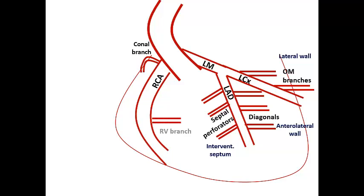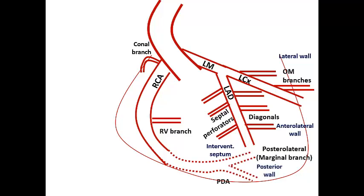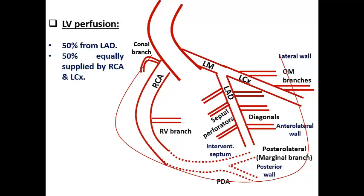The LCX runs in the left AV groove and gives origin to the obtuse marginal (OM) branch supplying the lateral wall of the left ventricle. The right coronary artery (RCA) runs in the right AV groove, giving origin to the conus branch proximally — sometimes arising by a separate ostium — and the RV branch supplying the RV free wall. The RCA then bifurcates into the posterolateral branch and posterior descending artery (PDA), supplying the posterior wall of the LV. The LV receives 50% of its blood supply from the LAD, making it mainly LAD-dependent.